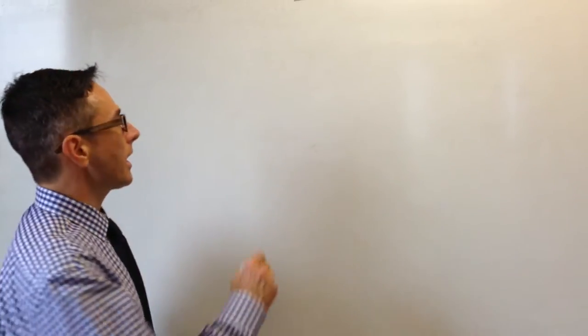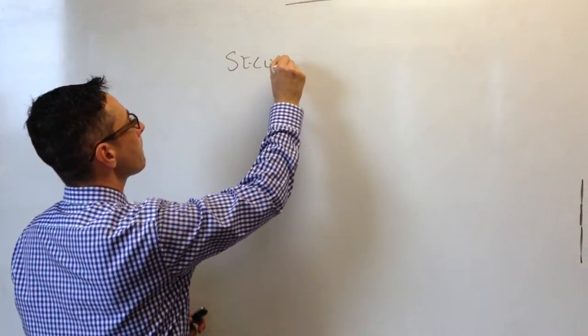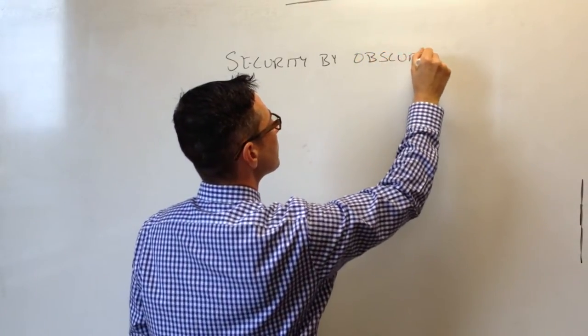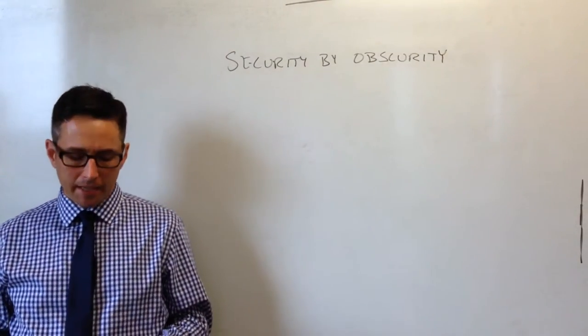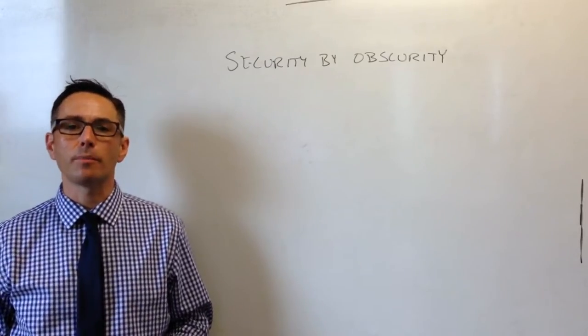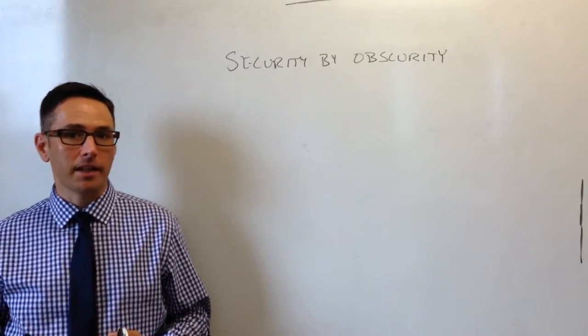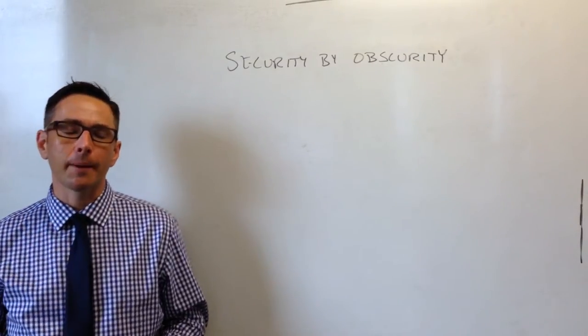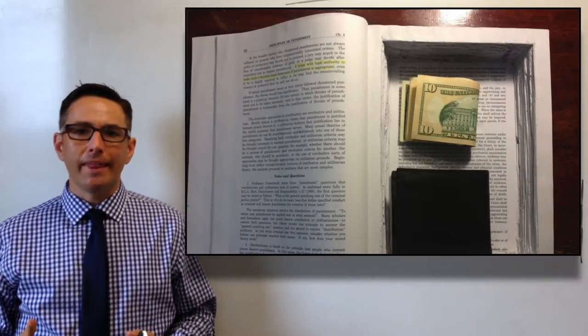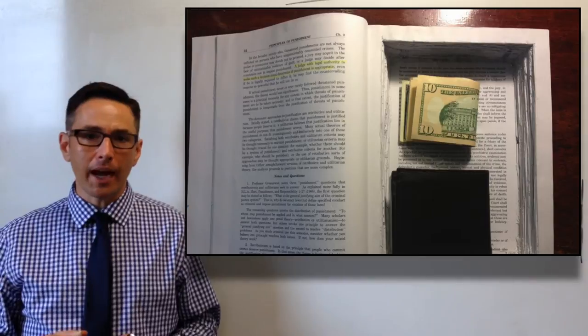When people design computer systems, there's two principles they think of in terms of how to keep something secure. The first one is called security by obscurity. Obscurity means hiding something. Usually when people in IT and computer science talk about security through obscurity, it's kind of an insult. It's a negative term for people that use this technique.